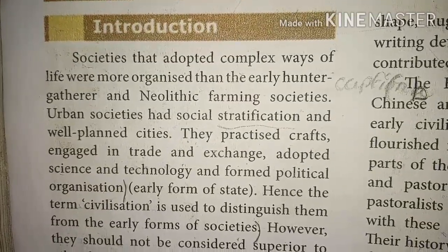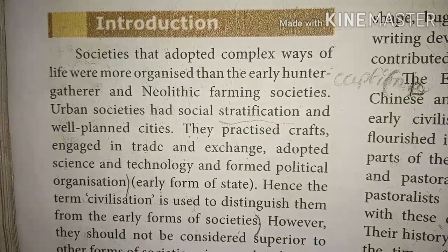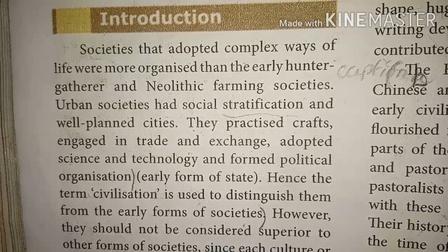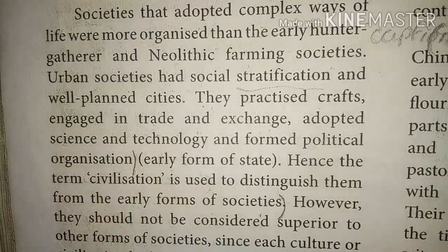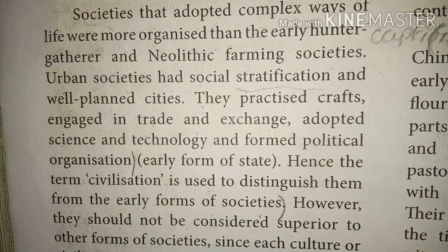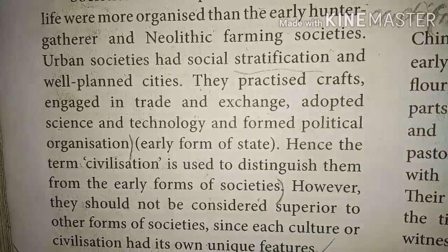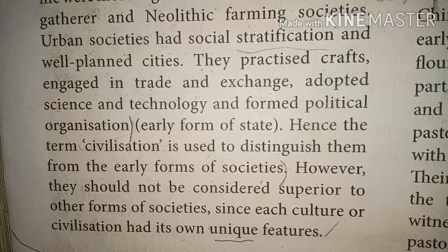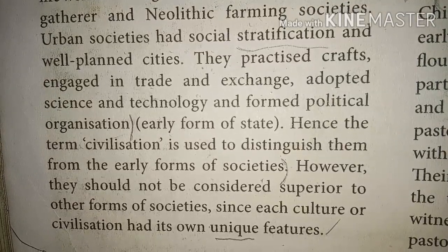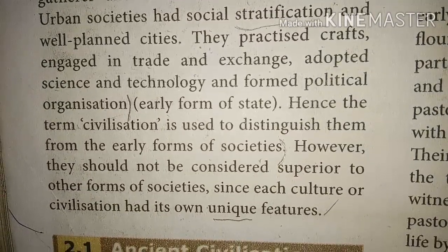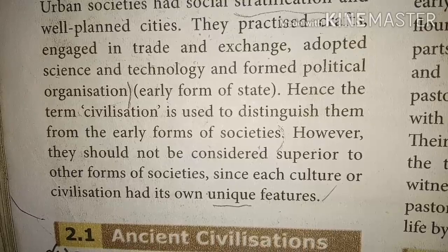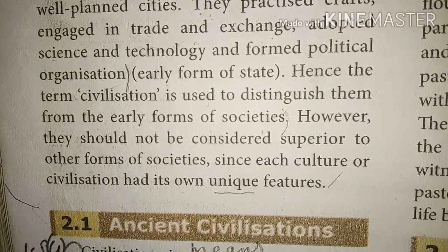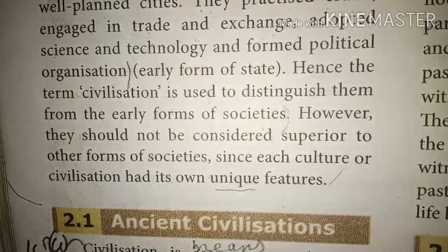Societies that adopted a complex way of life were more organized than the early hunter-gatherer and Neolithic farming societies. Urban societies had social stratification and well-planned cities. They practiced crafts, engaged in trade and exchange, adopted science and technology, and formed political organizations. Hence the term 'civilization' is used to distinguish them from early forms of societies.